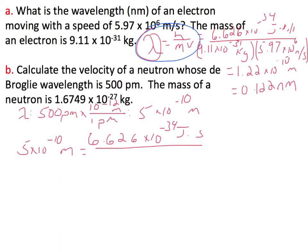We're dividing that by the mass and the velocity, but we're looking for velocity. We have the mass, which is 1.6749 times 10 to the minus 27th kilograms times the velocity.